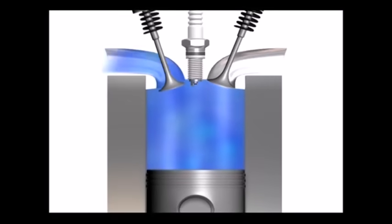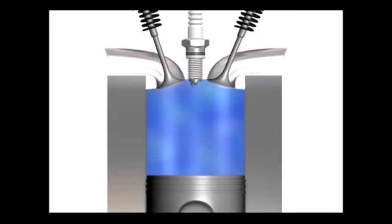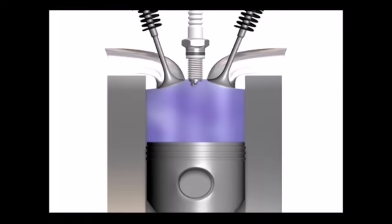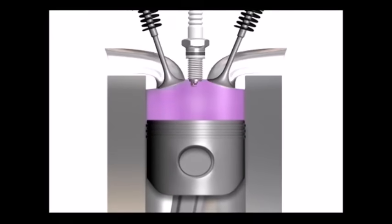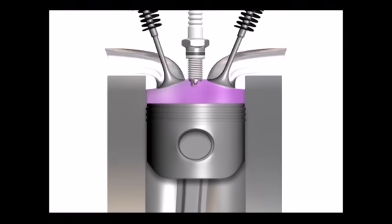Next, the intake valve closes and the piston moves on an upward stroke that compresses the air-fuel mixture. The compression of the air-fuel mixture will make it combust with greater force than if it were uncompressed. This is called the compression stroke.